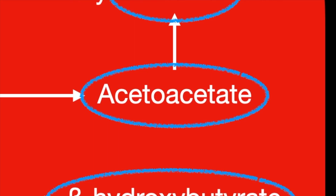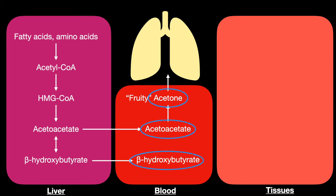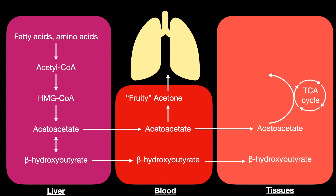Acetoacetate can be tested for in the urine. Acetoacetate and beta-hydroxybutyrate then reach the tissue and can be used in energy production by turning them into acetoacetyl-CoA using the TCA cycle. This can then become acetyl-CoA and be put back into the TCA cycle for ATP production.